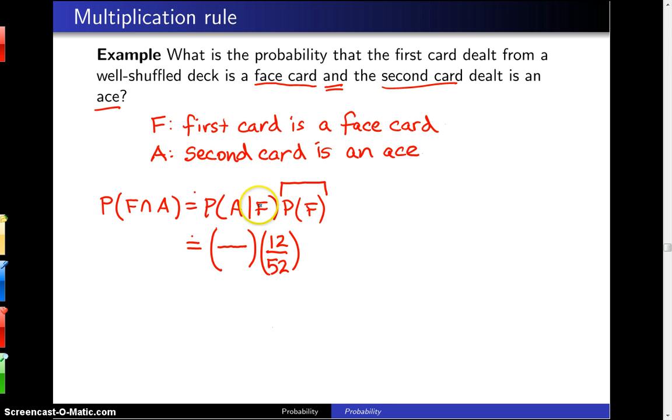Given that we have a face card on the first draw, the probability of an ace—now we have only 51 cards to deal with and 4 of those are aces, so you get 4 over 51. When you multiply this out, this is 48 divided by 2652, and in lowest terms that's 4 over 221. Fairly unlikely because this is a pretty specific draw right here.